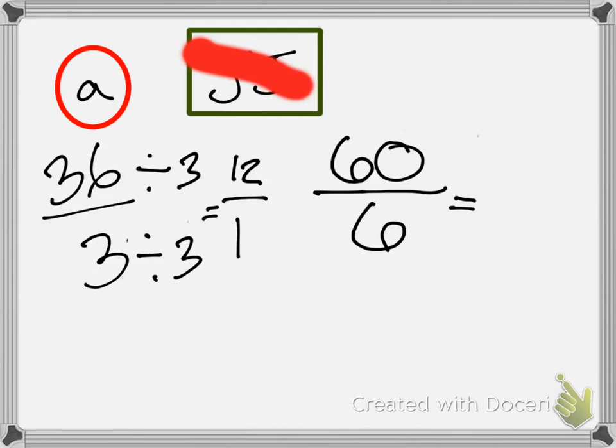We're going to do a unit rate, so we want to get it down to one on the bottom. What are we going to divide by? Who can tell me? Olivia. Three. But JJ was right in the end because we get 12 over 1. What about the other side? What are we going to divide by? Six. What is 60 divided by six? Ten. So are these equivalent? No.